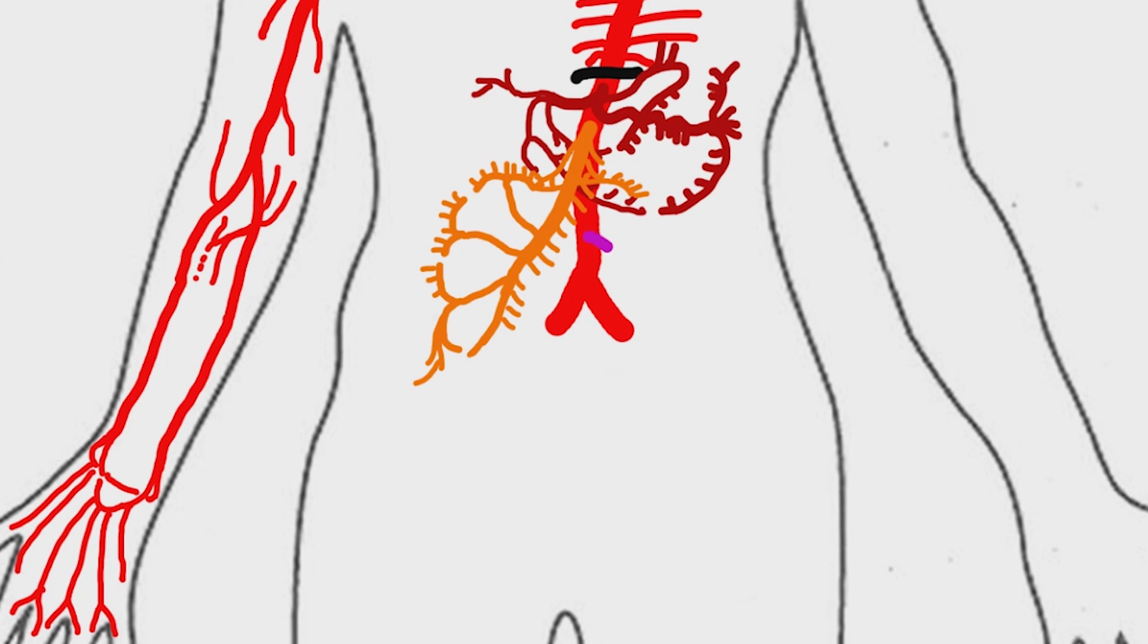Inferior mesenteric artery arises at the level of third lumbar vertebra. The territory of distribution of the IMA is equivalent to the embryonic hindgut. That is, it supplies the large intestine from splenic flexure to the upper part of the rectum, which includes the descending colon and the sigmoid colon.